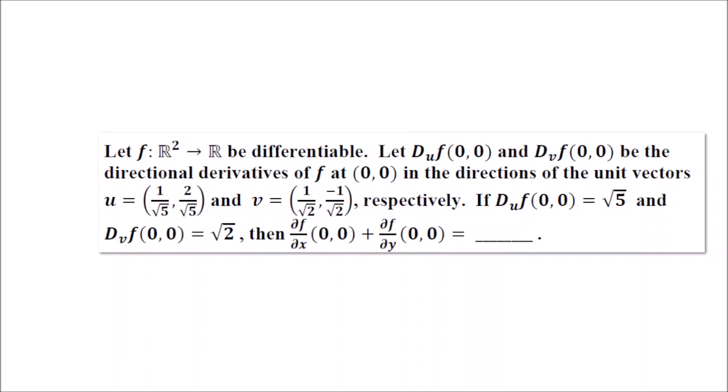Here a differentiable function is given to you, and the directional derivative of f at the point (0,0) in the directions of u and v is given to you. In the direction of u, the directional derivative of f at the point (0,0) is √5, and in the direction v it is √2.